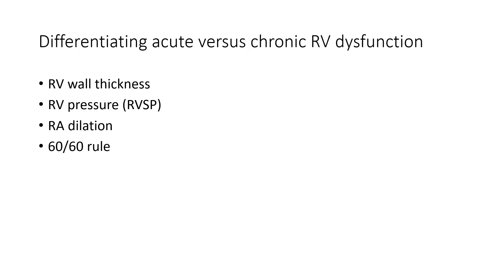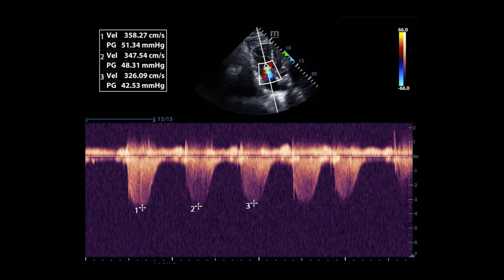In differentiating acute versus chronic RV dysfunction, multiple signs can be assessed: RV wall thickness, RV systolic pressure, and RA dilatation — which is more present in chronic RV dysfunction — and the 60-60 rule. The 60-60 rule states that if the pulmonary artery systolic pressure is less than 60 and greater than 30, with an acceleration time less than 60 milliseconds, the 60-60 sign is considered present, and this is 94% specific for acute cor pulmonale due to acute pulmonary embolism. Continuous wave Doppler through the tricuspid valve can be used to calculate the gradient across the valve, and adding the right atrial pressure allows determination of the right ventricular systolic pressure.